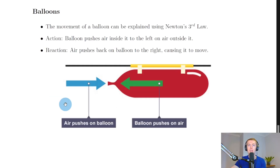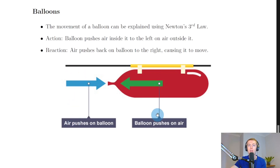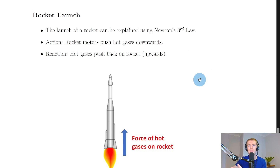The next example of Newton's Third Law is balloons and how they move. The movement of a balloon can be explained using Newton's Third Law. Once you've blown up the balloon, the action force is that the balloon pushes the air inside it to the left onto the air outside. The reaction force is that the air pushes back onto the balloon to the right, causing the balloon to move. That's our Newton pair of forces for balloons.